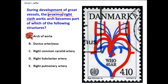Option B: the ductus arteriosus. What is the ductus arteriosus? It is a channel that short-circuits the lung between the left pulmonary artery and the arch of the aorta. It is formed by the distal part of the left 6th aortic arch. But we are looking for the proximal part of the right 6th aortic arch, not the distal of the left 6th aortic arch. So it is invalid.